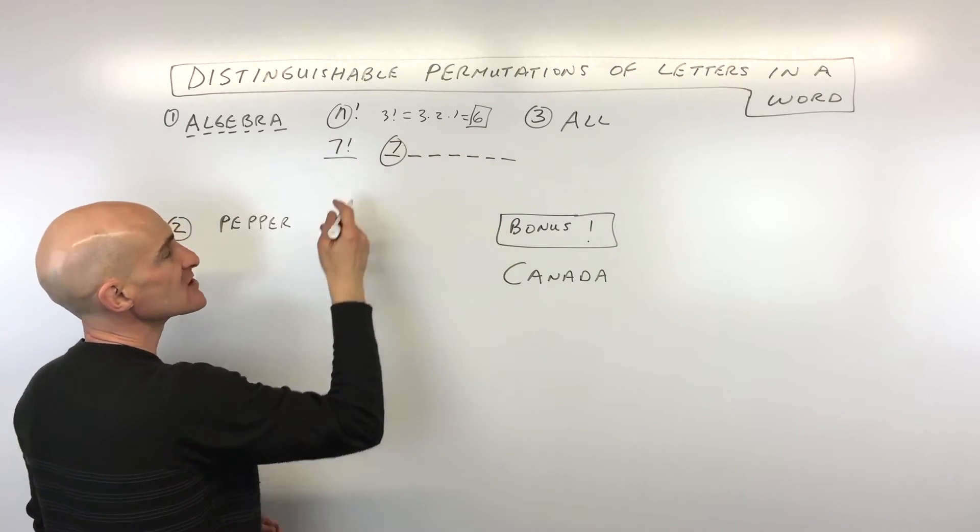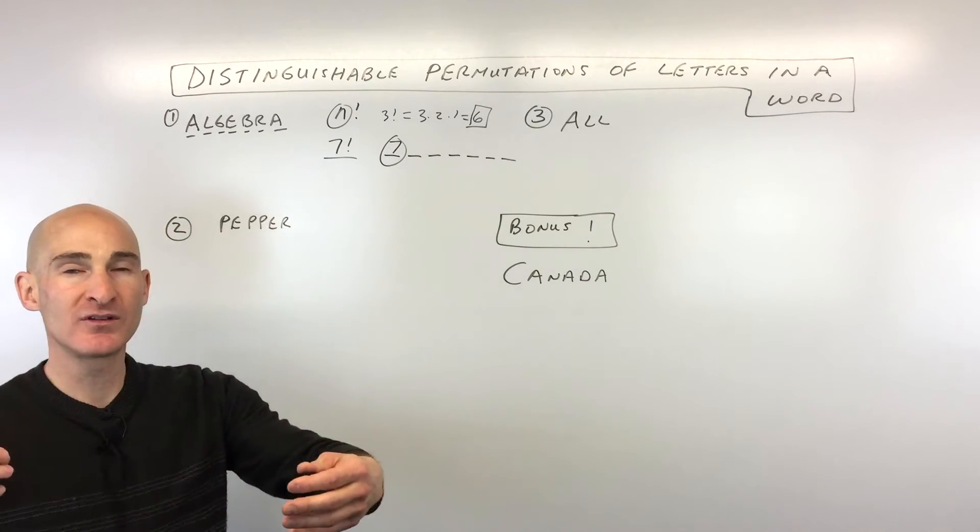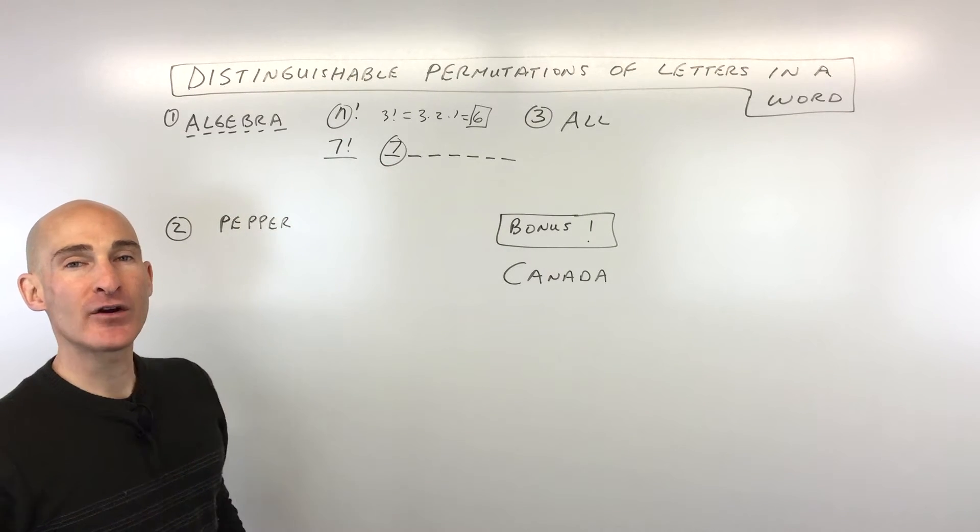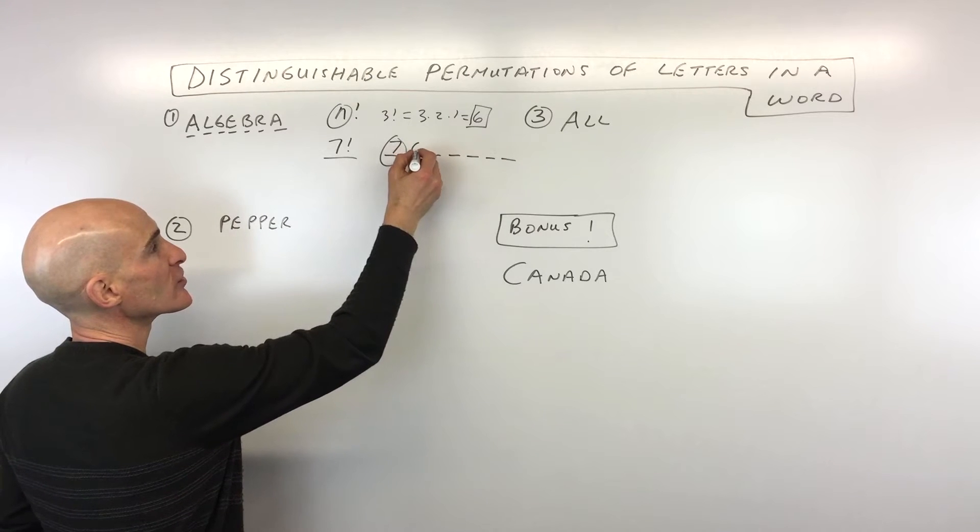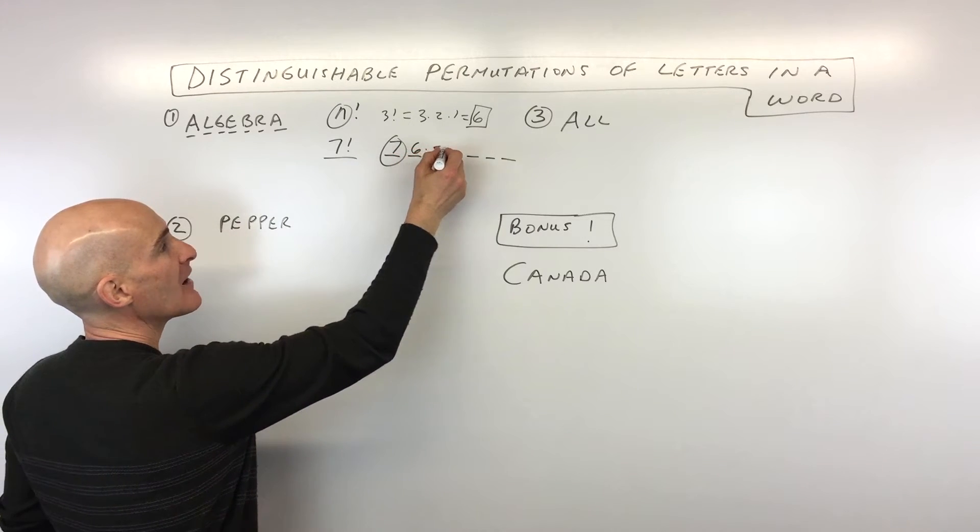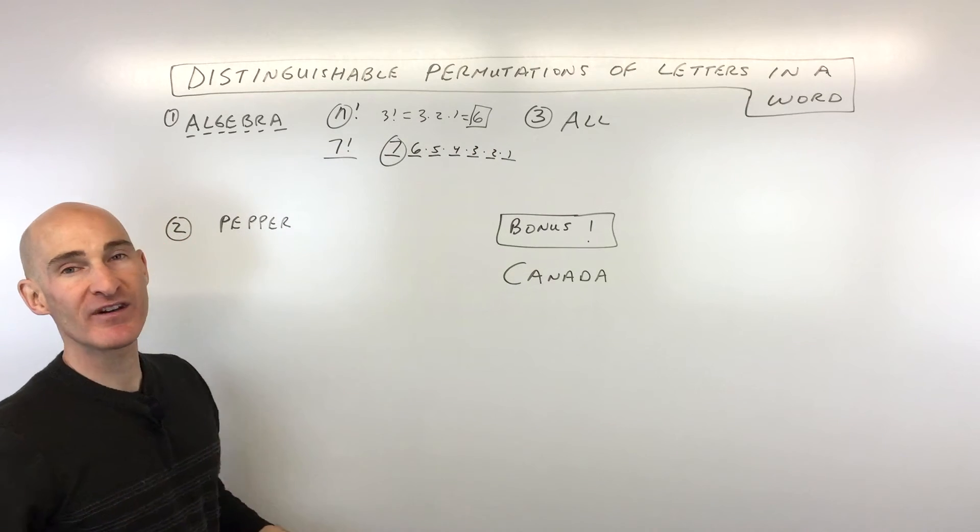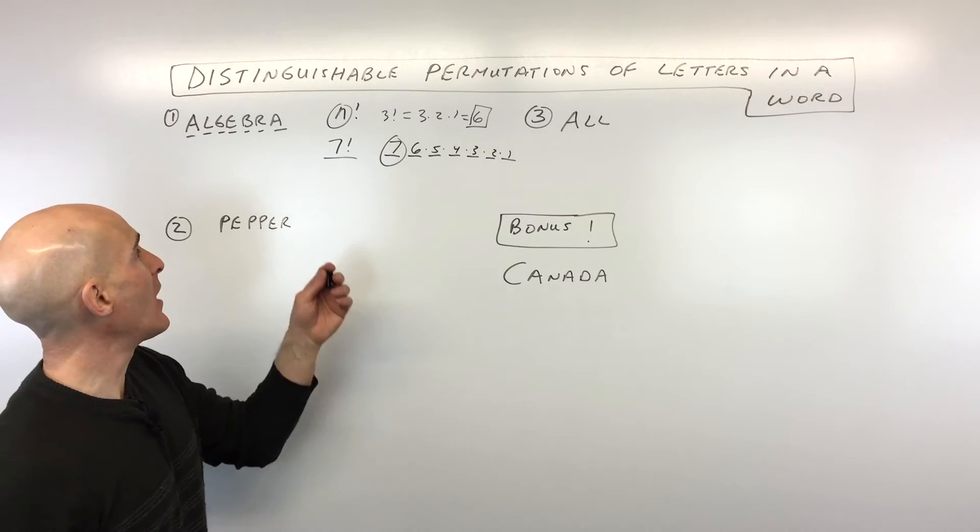There's going to be seven choices. Like if you were to reach into a hat, seven different choices for picking out that first letter. Once you pick out that first letter, how many are there left to choose for the next letter in the word? There's going to be six, and then five, and then four, and then three, and two, and one. That's the same as what I've written here, seven factorial. So that's another way to think about it.